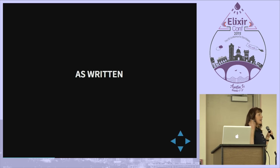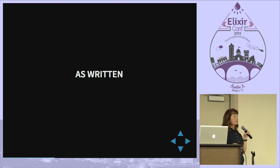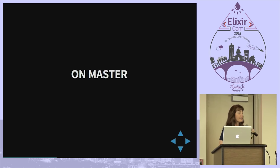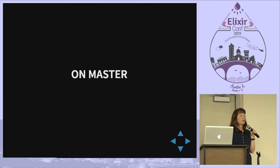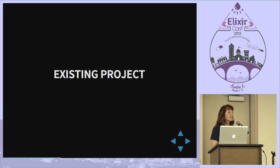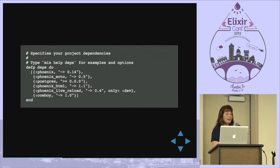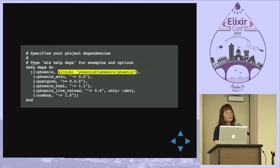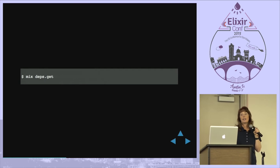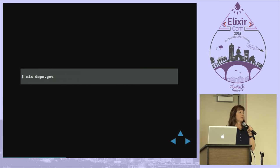Another thing you can do is reproduce issues. If someone says 'I did A and B happened and I expected C,' you can work through their steps and try to reproduce it and help them figure out what's gone wrong. At some point someone might say 'I think that's fixed on master — can you try that on master and see if it's still a problem?' So we'll look at Phoenix. Assuming you have an existing project with a mix.exs file, the first thing you can do is open up your mix.exs file, swap out the Phoenix dependency, and point it straight at GitHub, then tell mix to go get your dependencies to pull down the latest source code.